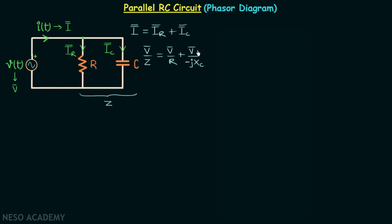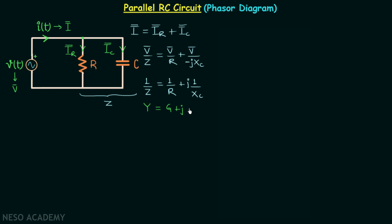Taking V phasor common from the two terms and cancelling it, we have 1/Z equal to 1/R plus j(1/XC). We know that 1/Z is our admittance, 1/R is our conductance, and 1/XC is our susceptance — in this case, capacitive susceptance.